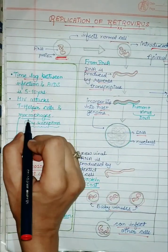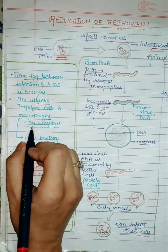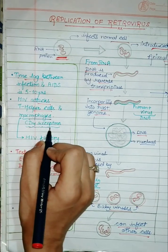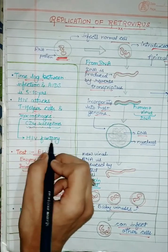This virus always targets helper cells or macrophages, because they have a CD4 receptor. We call the macrophages the HIV factory.